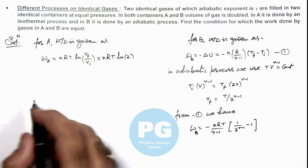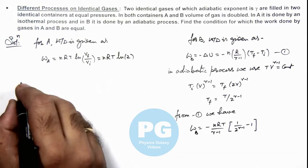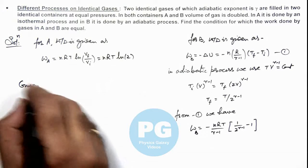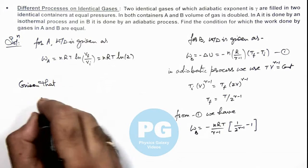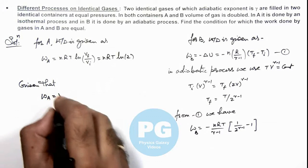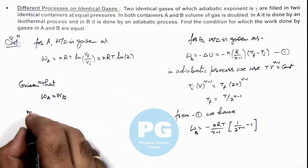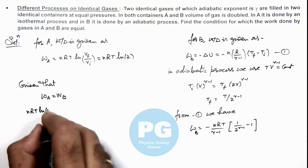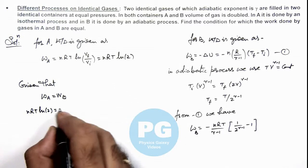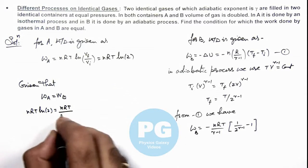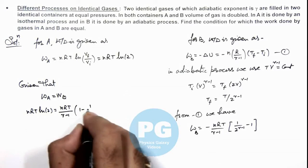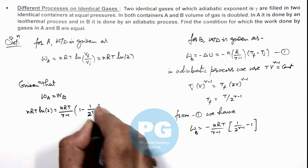Now from these relations, given that W_A should be equal to W_B. So here if we relate the two, this nRT ln(2) should be equal to this nRT/(gamma-1) multiplied by 1 minus 1/2^(gamma-1).